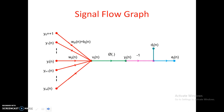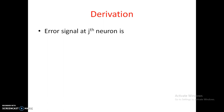Once yj(n) is obtained, it is subtracted from dj(n) — multiplied by minus one — so dj(n) minus yj(n) gives us ej(n), where ej(n) is the error at the jth neuron. Based on this error, the weights are updated according to the error correction learning rule or delta rule. So the error signal at the jth neuron is: ej(n) = dj(n) − yj(n). This is equation 1.